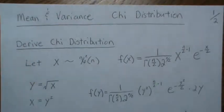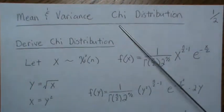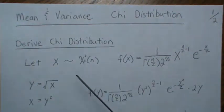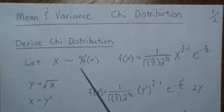Hello, in this video we're going to derive the mean and variance of a chi distribution, not a chi-squared but a chi distribution. Let's jump right in. A chi distribution is derived as the square root of a chi-square distribution.